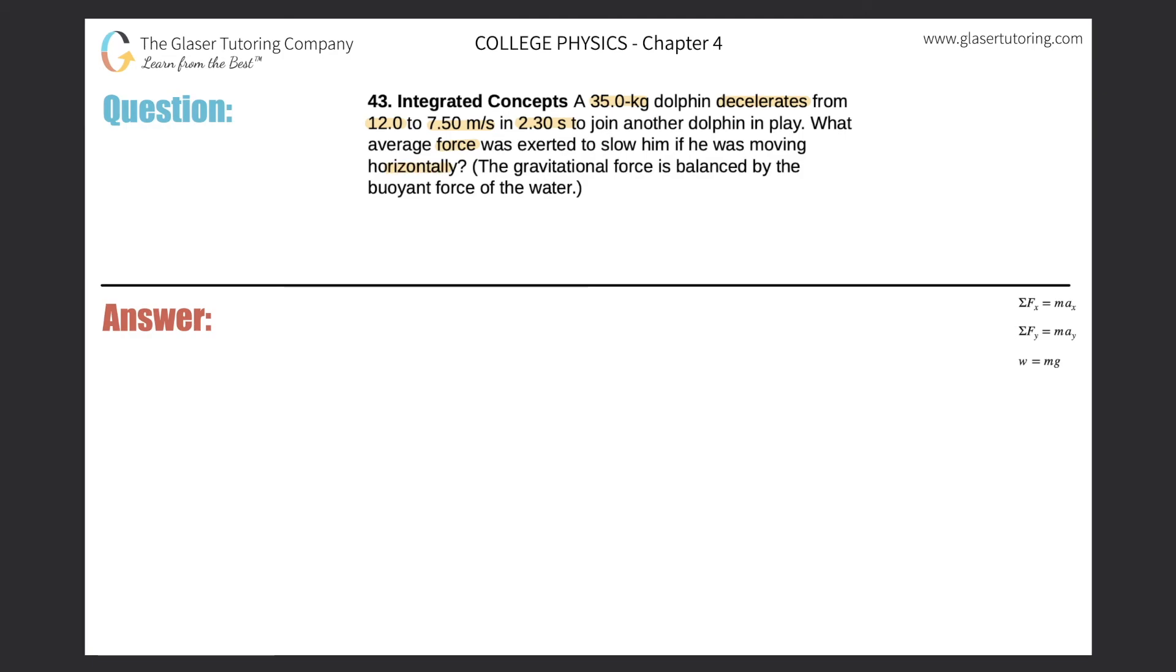First let's depict a dolphin here. It looks more like an airplane but pretend it's a dolphin. We have a dolphin with some initial velocity. It told us that it is 12.0 meters per second. It's going to slow down and its final velocity will be 7.50 meters per second.